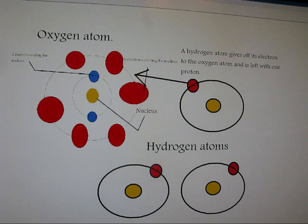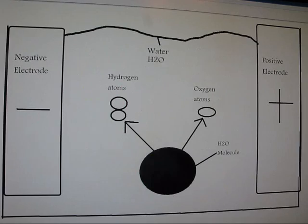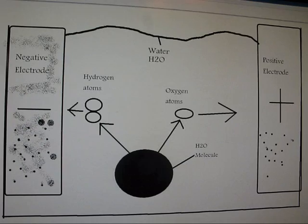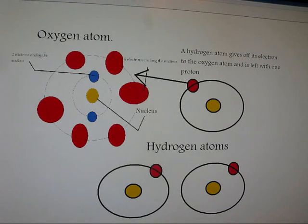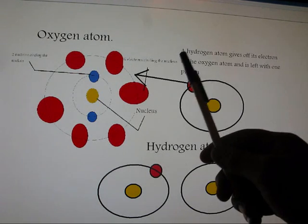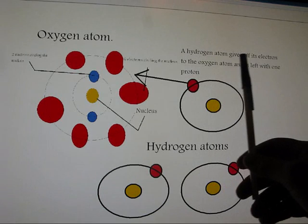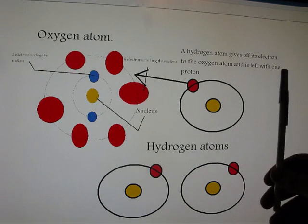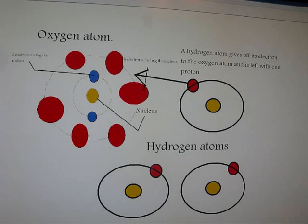If we come here, when the hydrogen atoms and oxygen atoms split, what they then go and do is the hydrogen atoms, so it says here, a hydrogen atom gives off its electron to the oxygen atom and is left with one proton. So basically what happens is, these two atoms here give up both their electrons, or each of them gives off one electron to this one oxygen atom here.